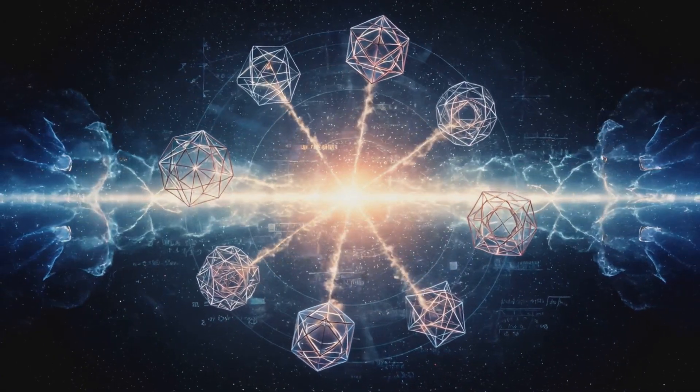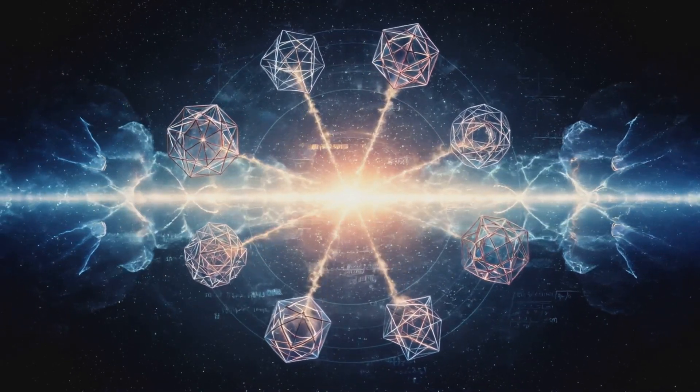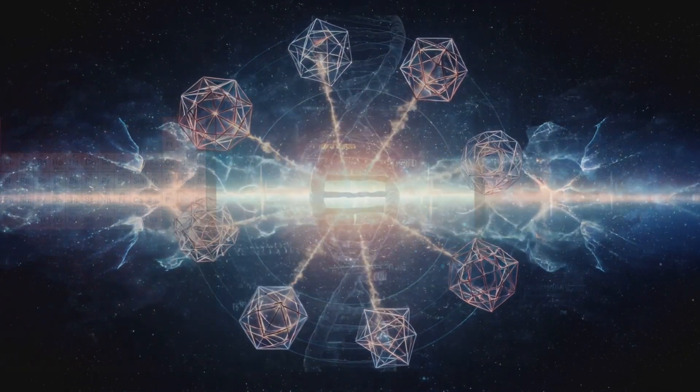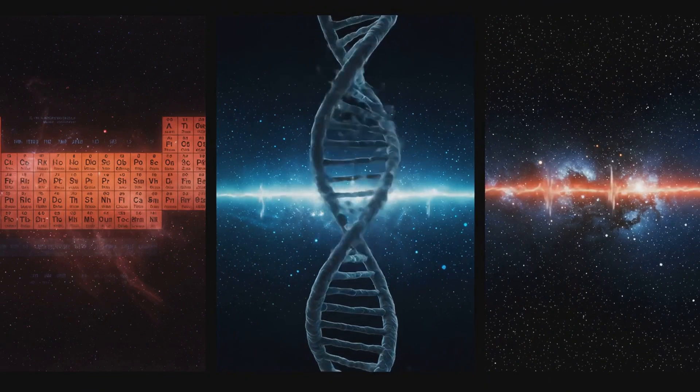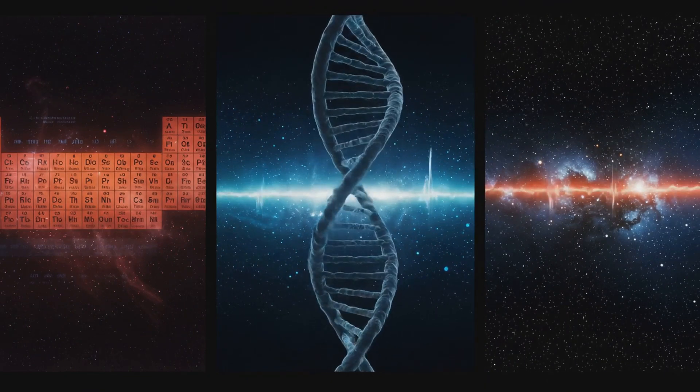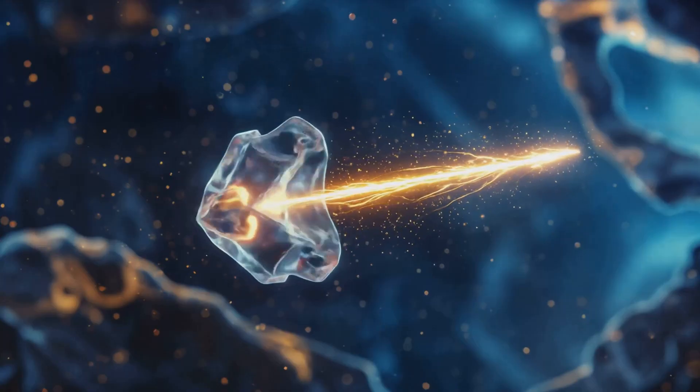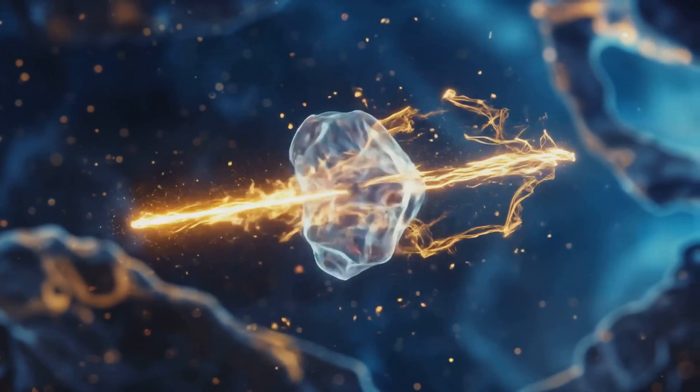Only special frequencies endure through this projection, those that resist decoherence. These are defined by the prime numbers mod 30. They form the basis of the periodic table, the geometry of DNA, the harmonics of stars and stable matter.